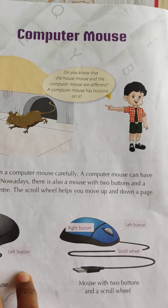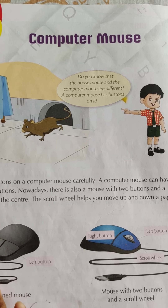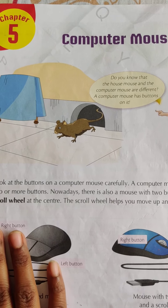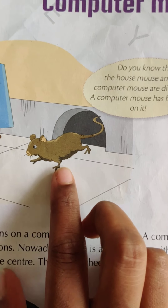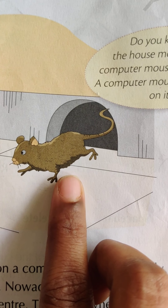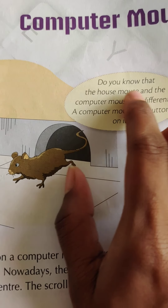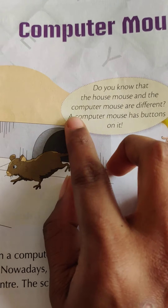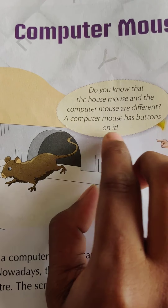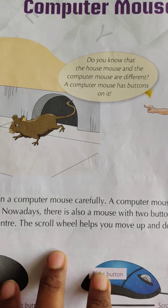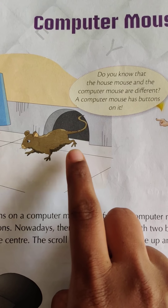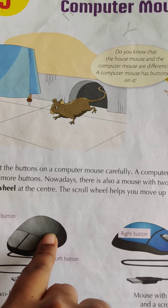I hope all of you liked the video and nicely understood about the mouse. So now let's start our lesson. Look at here. What is this? This is the mouse. Do you know that the house mouse and the computer mouse are different? A computer mouse has buttons on it. This is the real mouse — a house mouse. These mice and the computer mouse are different.